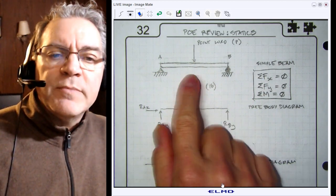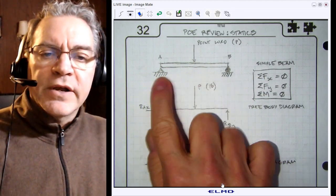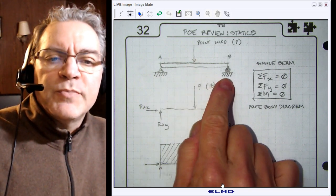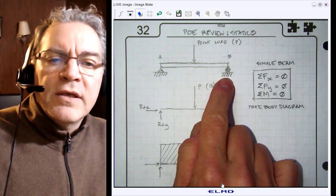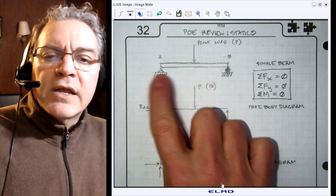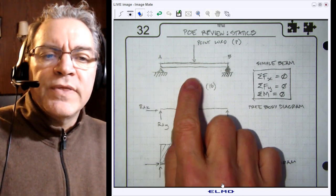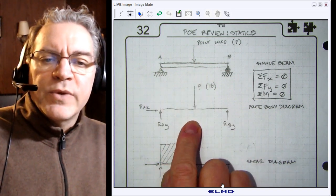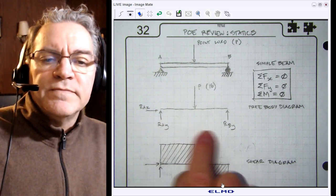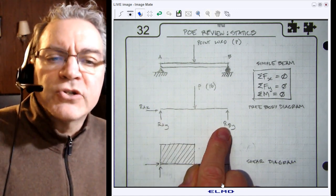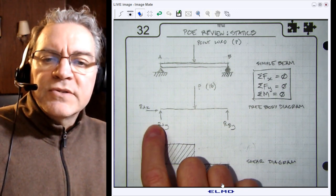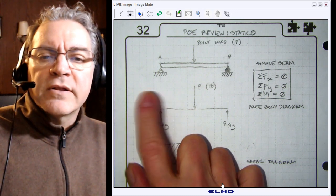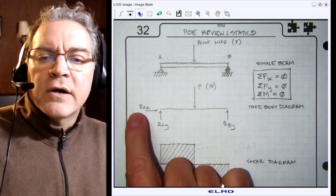So the simple beam diagram shown here has a single point load applied. We have two supports, one on either end. On the right we have a roller and on the left we have a pin. The only difference between the beam diagram and the free body diagram is we have now abstracted the supports into their component reaction force vectors. At point A we have two reaction vectors representing the horizontal and vertical forces, called RAx and RAy.